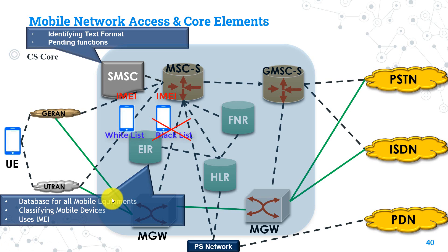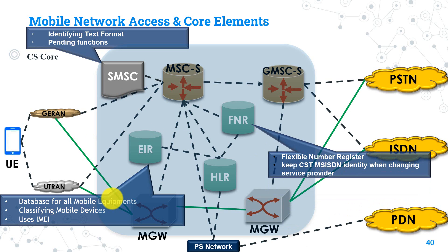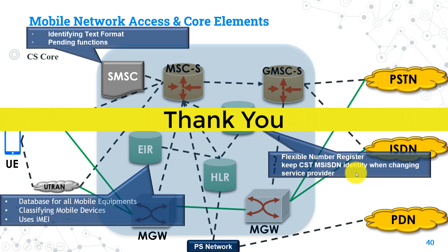Finally, the FNR — Flexible Number Register. Its main function is to keep a customer's MSISDN identity the same when changing service provider. For example, when a customer cancels their subscription with one operator and subscribes with another, they can retain the same MSISDN. This is called the FNR feature. This concludes the overall CS network structure, covering all the nodes in it.